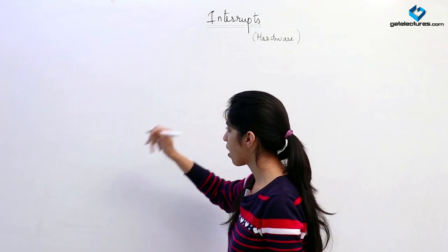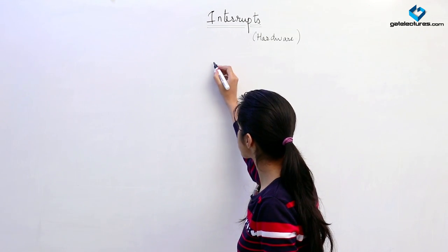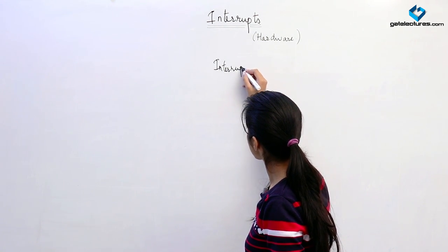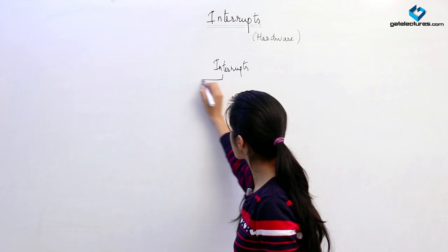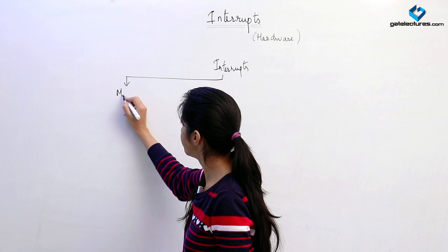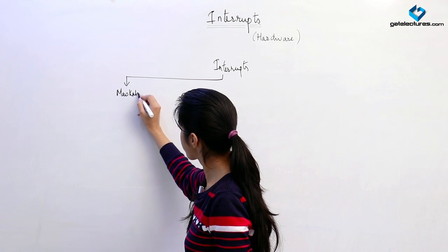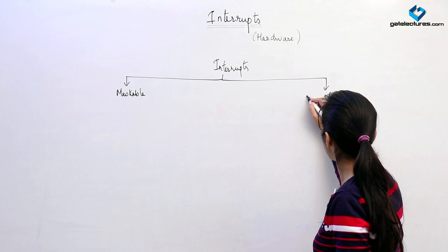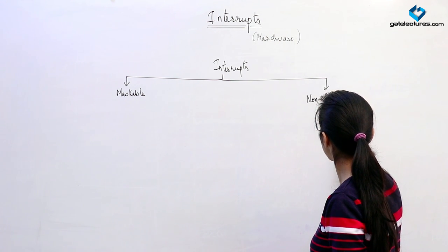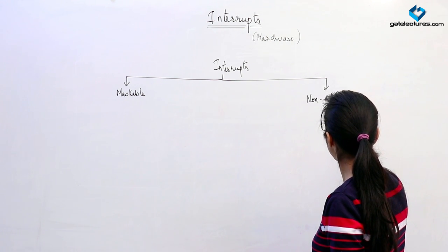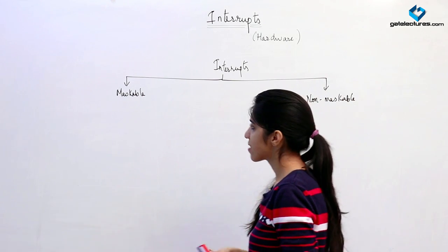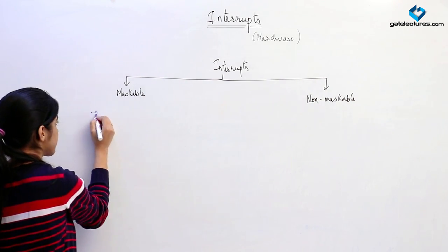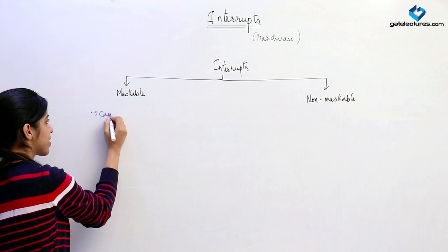Interrupts can be classified in one other way. Either an interrupt is going to be maskable or non-maskable. The difference is that maskable interrupts can be delayed. We can delay maskable interrupts.